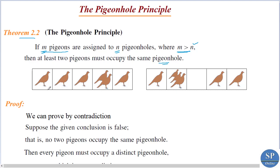The illustration is: there are one, two, three, four, five pigeonholes, but there are six pigeons. So in this case at least two pigeons occupy the same pigeonhole.